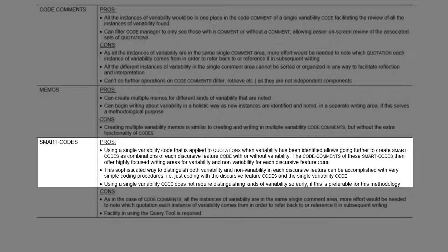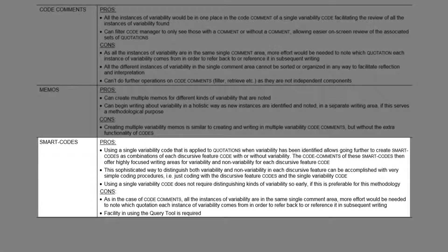This code can be used just to tag quotations that indicate variability, as Trina did, but then two smart codes can be created for each discursive feature: first, for quotations coded to both the discursive feature code and also to the variability code; and second, for the discursive feature code and not coded to the variability code. Descriptions of variability can then be written in the comment of each smart code to fulfill the methodological purpose of enriching the understanding of that discursive feature, rather than developing separate analysis of variability itself. The only disadvantages are practical: a little more effort writing quotation numbers in the freeform comment area, and needing to get up to speed on using the query tool to create the smart codes.